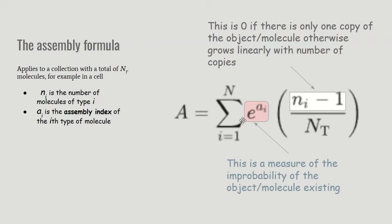So what he's got here is E to the AI, which is a weighting in terms of the improbability of the object or molecule existing. It's an exponential function of the number of steps. And he then scales it by NI minus one, with the number of copies minus one. Why does he take away one?